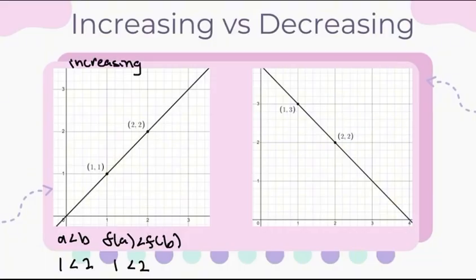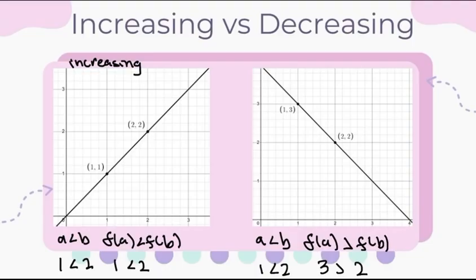The function on the right is decreasing, because a is less than b, and f(a) is greater than f(b). So here, a is 1, and b is 2, and f(a) is 3, and f(b) is 2. So that means this function is decreasing.